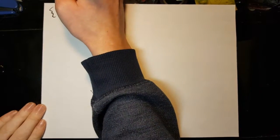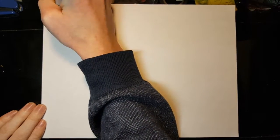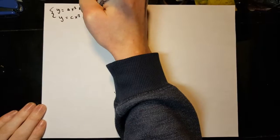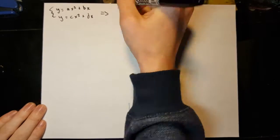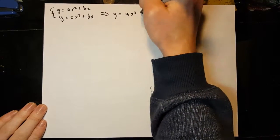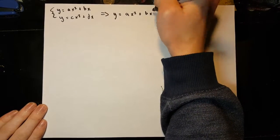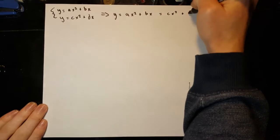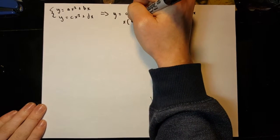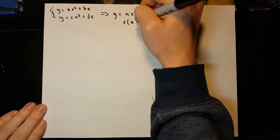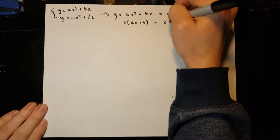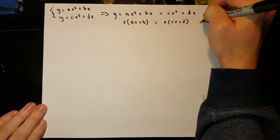If we set both equations equal to one another, we know that by factoring out an x, x equals 0 is always a solution. By dividing both sides by x, we get the equations of two different lines being equal to one another. Since we already know that x equals 0 is a solution, what we're looking for are equations with another additional x solution.